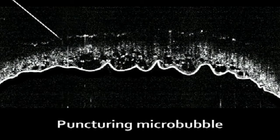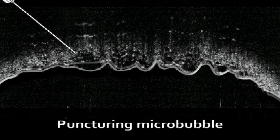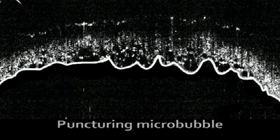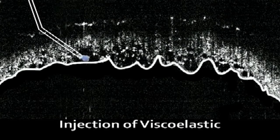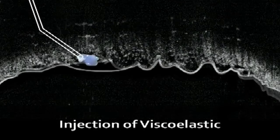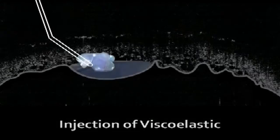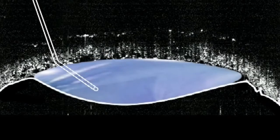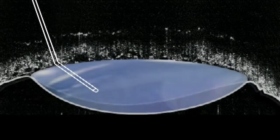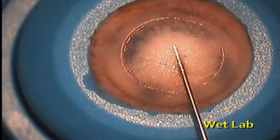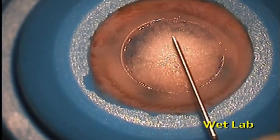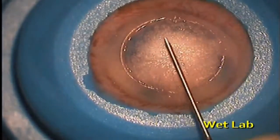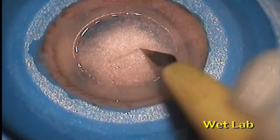Hypothetically, if one microbubble could be punctured and a viscoelastic substance injected, it might be possible to detach the Descemet from the rest of the stroma. So we went back to the wet lab to see whether it really works.